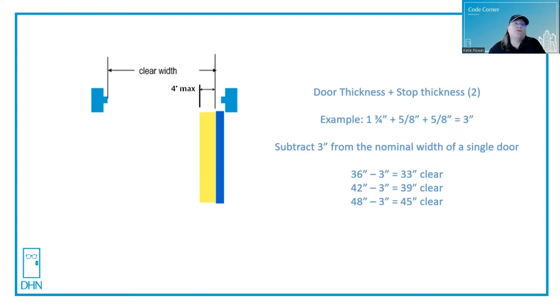The nice thing is we don't have a conflict here. ADA requires 32 inches minimum clear, and egress chapter 10 of the IBC also requires 32 inches minimum clear unless by exception.